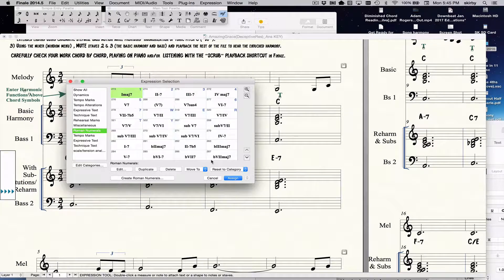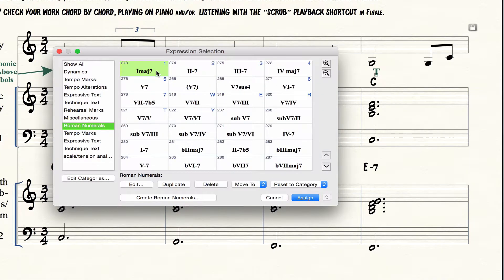If I double click they're there under roman numerals and what I've done to prepare this is I've used these little arrows to get the most commonly used ones up near the top and I've also programmed them with meta tools to be easy for the students to find. And what I've done here is intuitive shortcuts: the number one for one major seven, the number two for two minor seven, and so on.